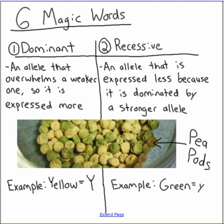When we do practice, we represent the dominant characteristic — yellow — with a capital letter, and the recessive characteristic with a lowercase letter derived from the dominant one. So yellow will be represented by a big Y, and green will be represented by a little y, because the dominant color is yellow.